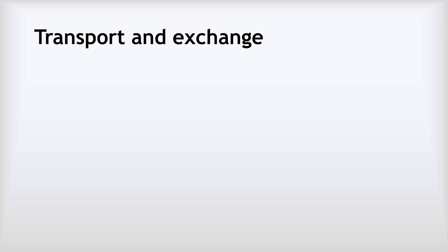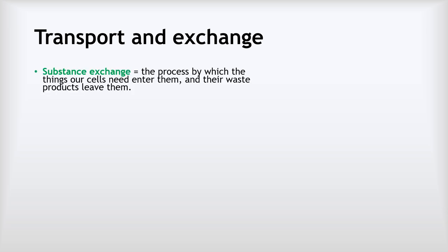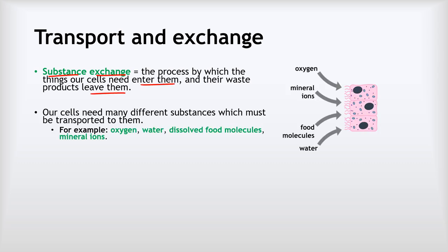Let's start by looking at transport and exchange. We've got this key phrase we often use, which is substance exchange. This is the process by which the things our cells need enter them and their waste products leave them. There are a range of different substances that our cells need and they must be transported to our cells in the blood and then they enter the cells.